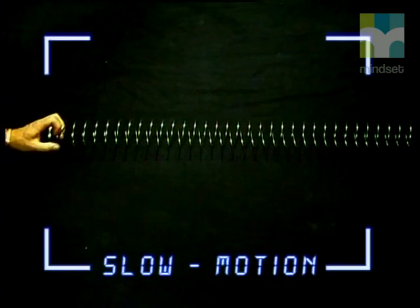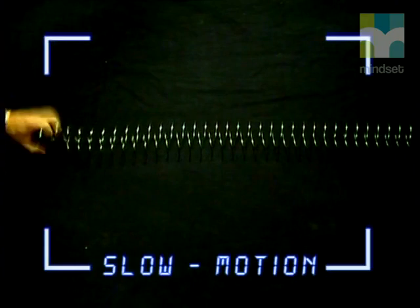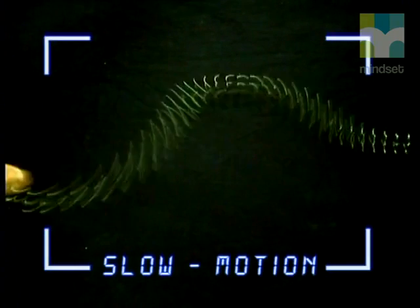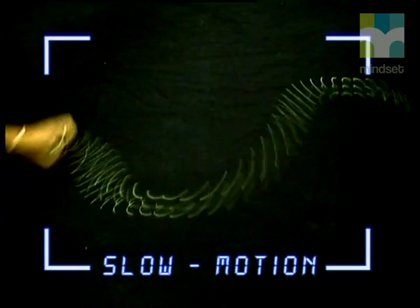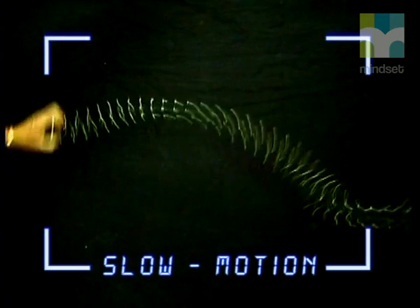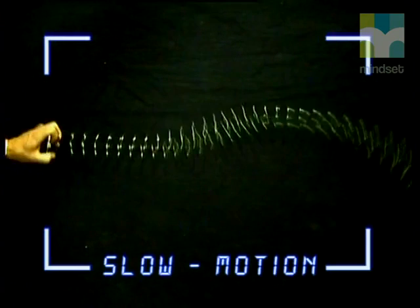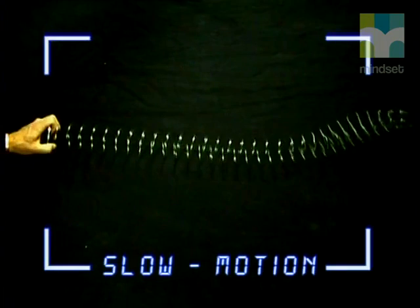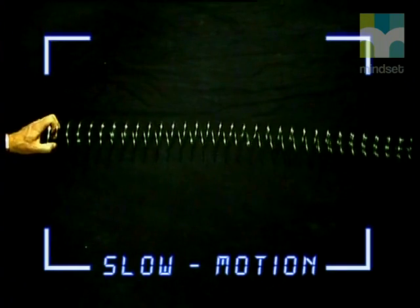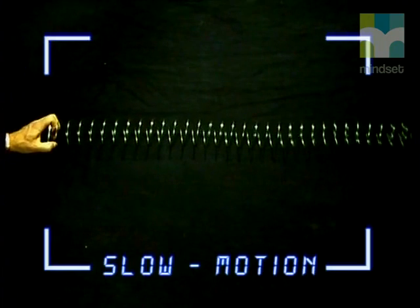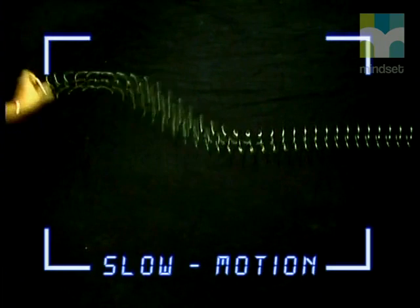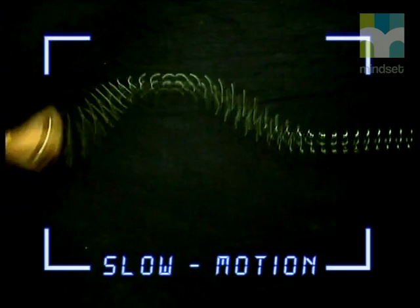Do you see that there is a movement — the movement of the person's hand that disturbs the coils of the slinky next to the person's hand? But notice the disturbance affects other coils of the slinky too. In fact, all the coils of the slinky move in the same way.